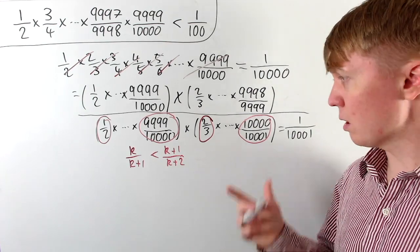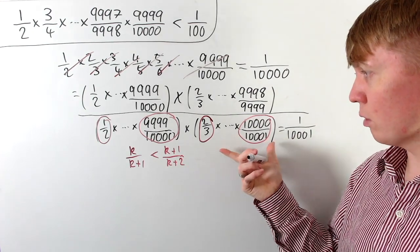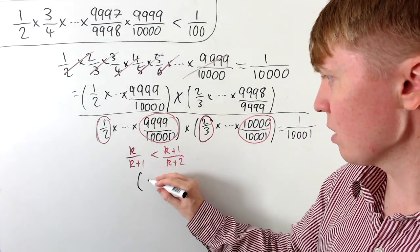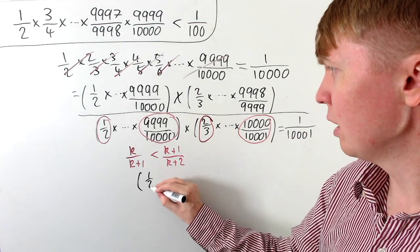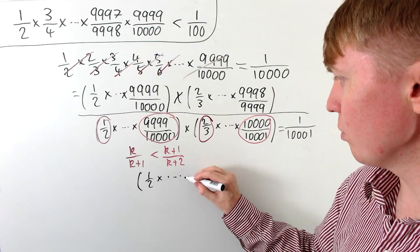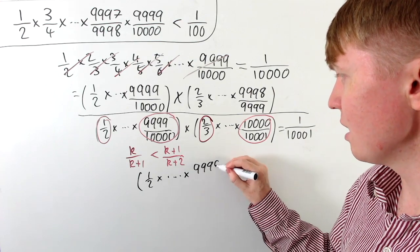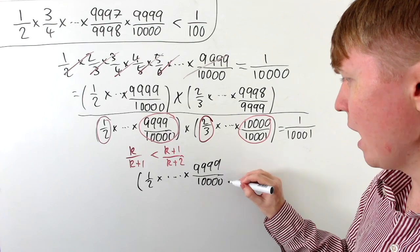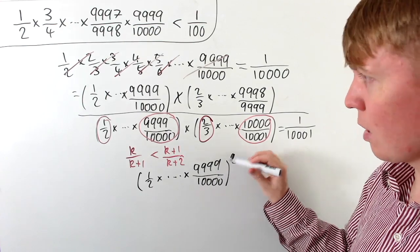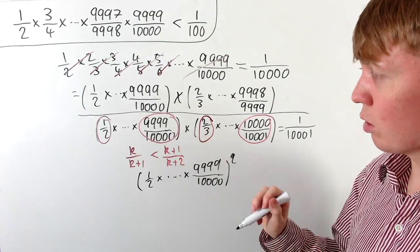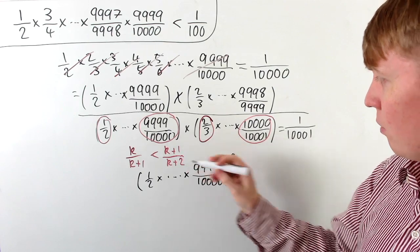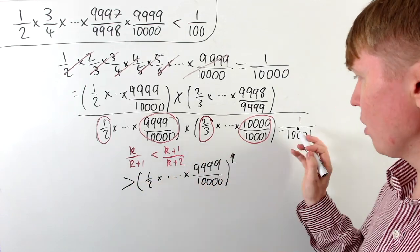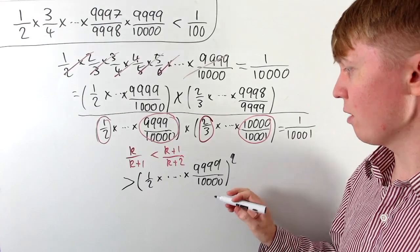So if we replace the second product by our original product, on the left-hand side we'd have one half times all the way up to 9,999 over 10,000, squared — two copies of our original product. We've made everything smaller, so this is now less than 1 over 10,001.